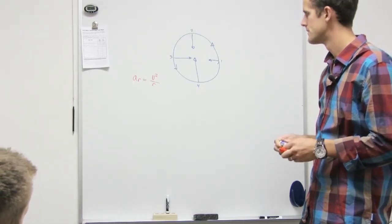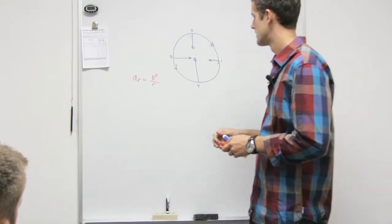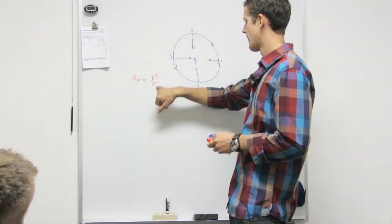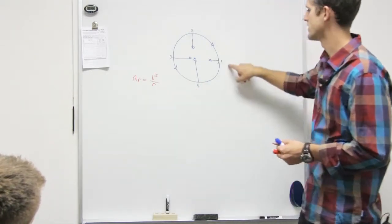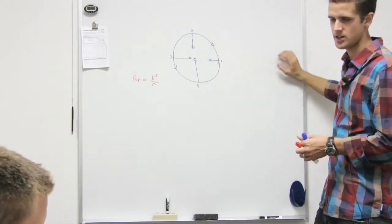The radial? Right. So this is the radius. So this is the velocity squared over the radius. So if this is just a circle, has the radius changed?